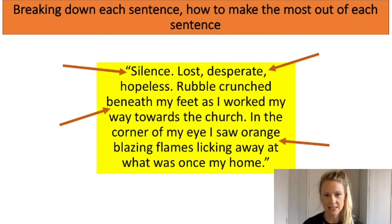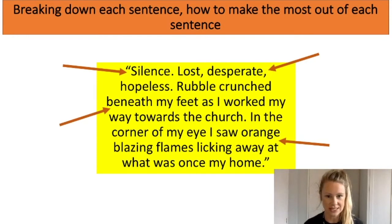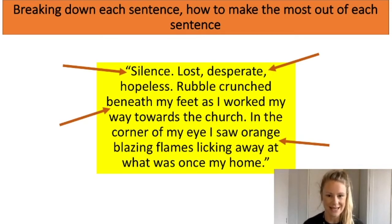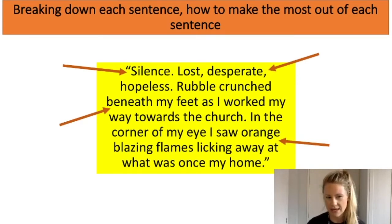If you look at that first sentence you'll probably notice that it's just one word. This is really effective in a short story as it hooks us in — we get interested straight away. We don't have much information yet though so we want to keep reading on. The next sentence is a set of three adjectives. We're not given much information but we get a little bit of a sense of the atmosphere and it's revealing slightly more information whilst building a little bit of tension. The next two sentences are both examples of sensory imagery — in the first we hear rubble crunching beneath the person's feet, and in the last sentence we can see some fire. This gives us a little bit more information but we still don't have a full picture, and therefore we're intrigued as the reader to read on.